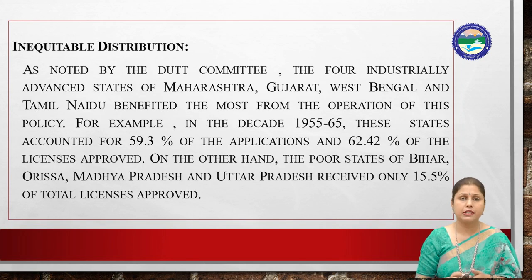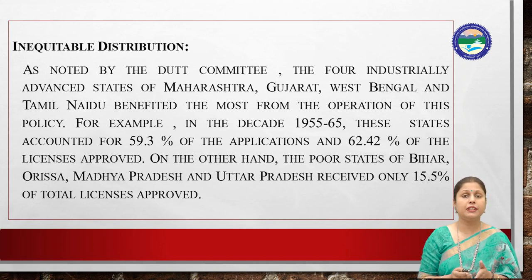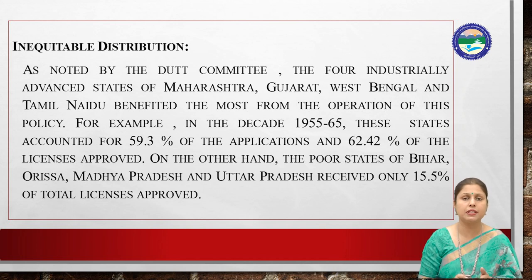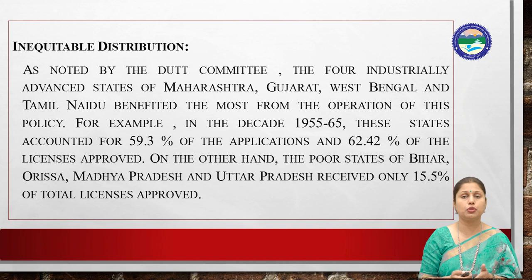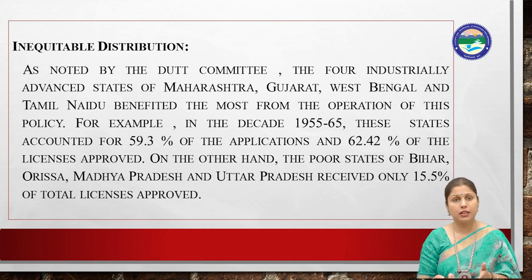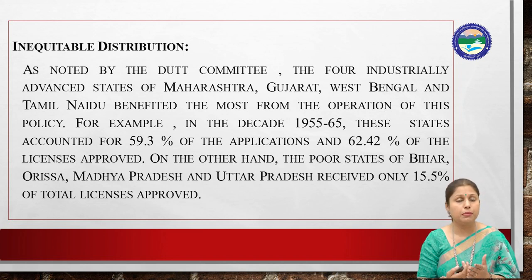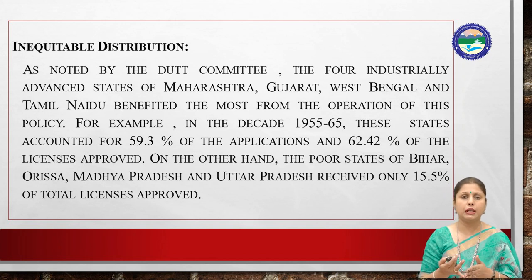The next criticism is inequitable distribution. As noted by the Dutt Committee, the four industrially advanced states of Maharashtra, Gujarat, West Bengal, and Tamil Nadu benefited the most from these policies. In the decade 1955 to 1965, these states accounted for 59.3% of the applications and 62.42% of the licenses approved. On the other hand, the four states of Bihar, Orissa, Madhya Pradesh, and Uttar Pradesh received only 15.5% of the total licenses approved. So the objective of balanced regional development was not achieved at all.